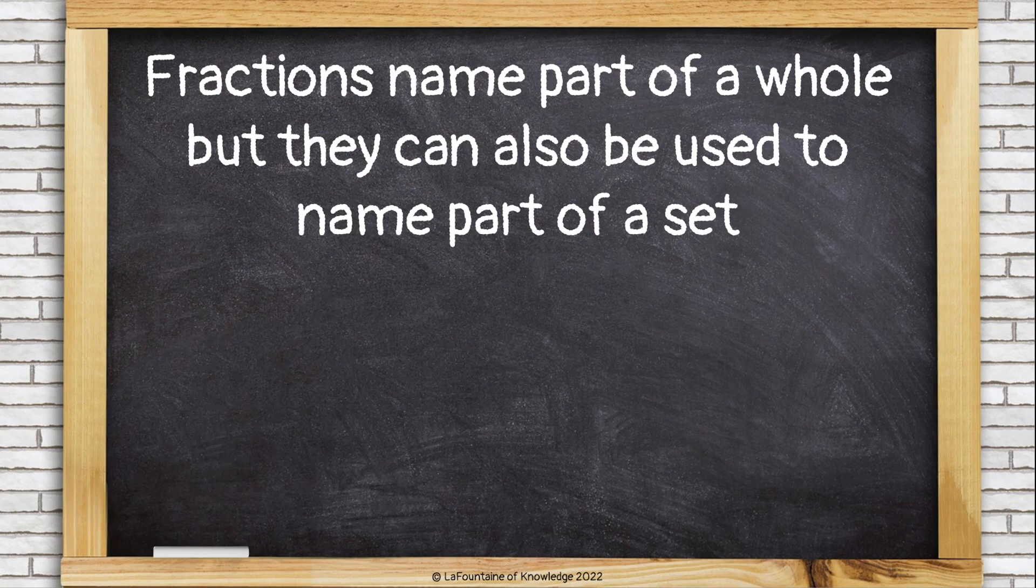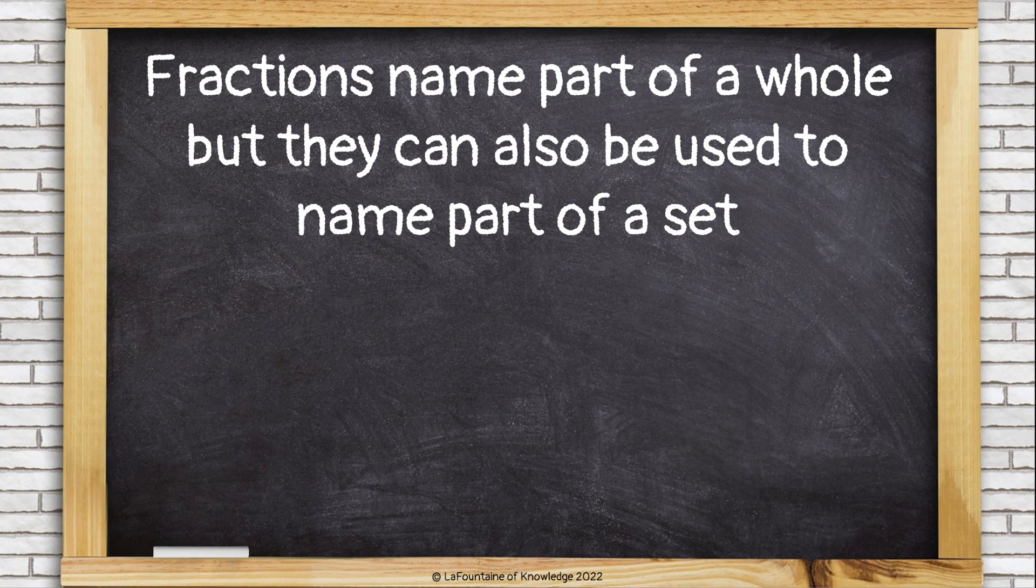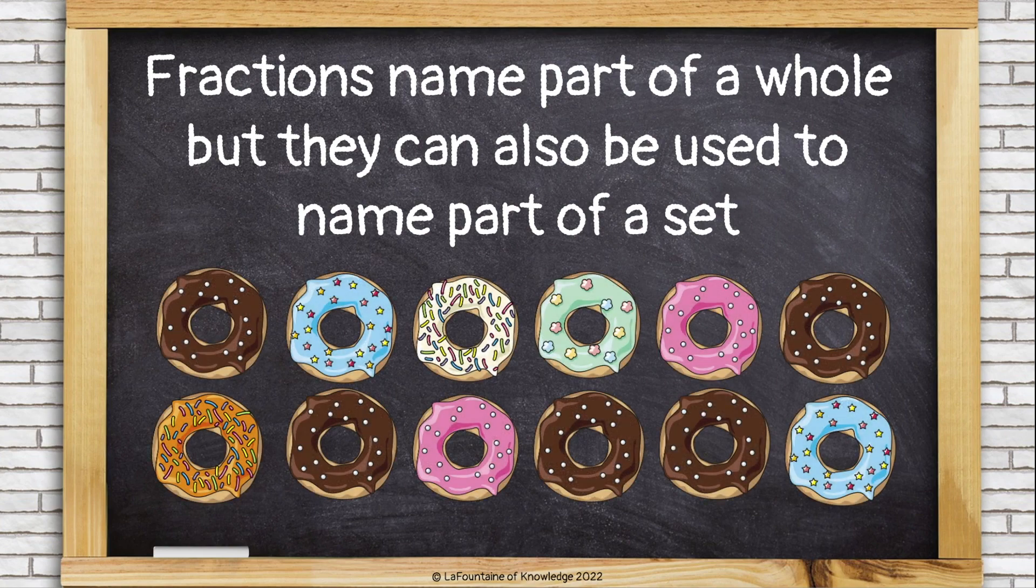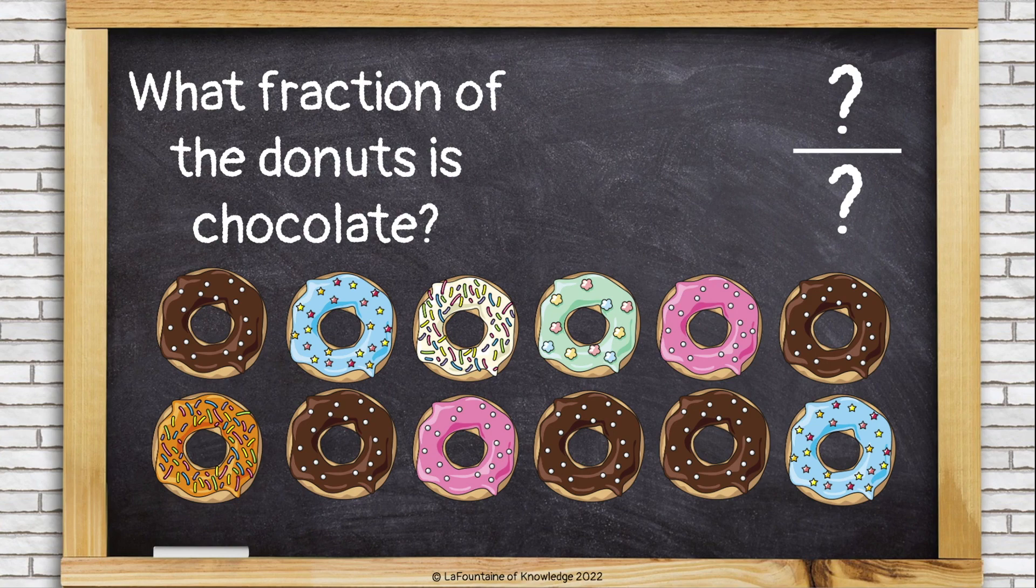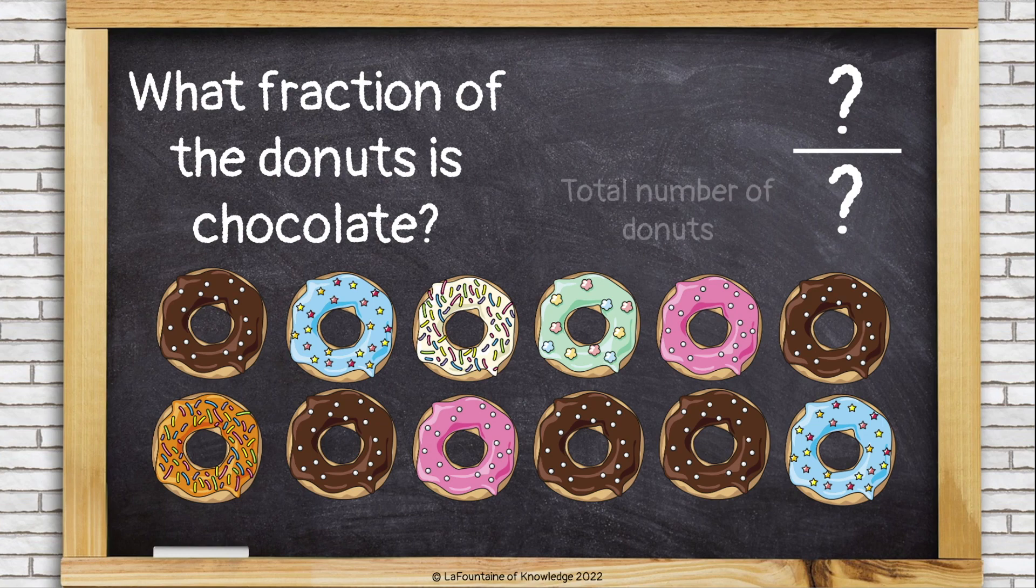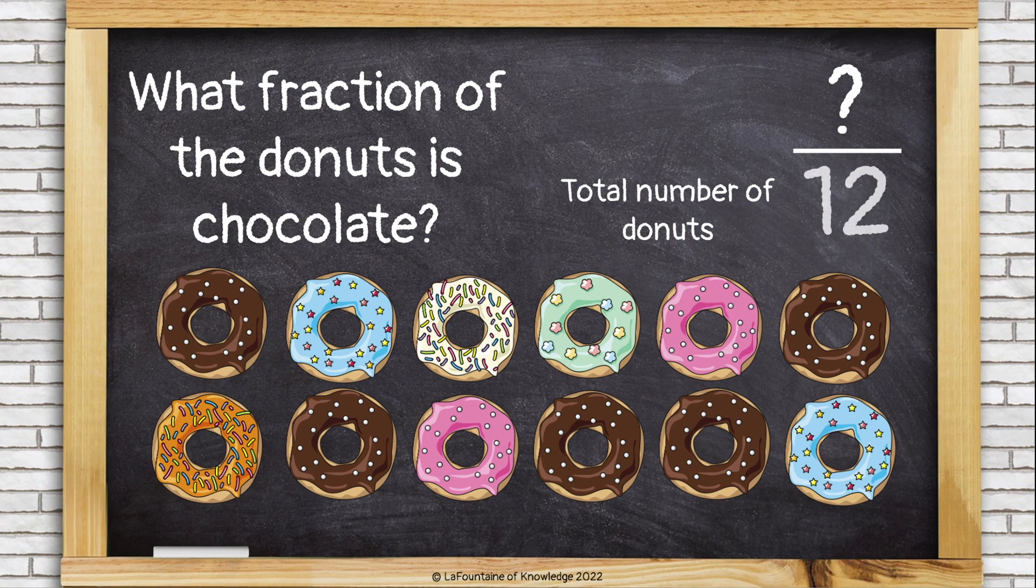Fractions name part of a whole, like the pizza, but they can also be used to name part of a set. Consider these doughnuts. If I was asked to find what fraction of the doughnuts is chocolate, I would first need to figure out how many total doughnuts I have. Remember, the denominator is the total number of doughnuts, and that's 12.